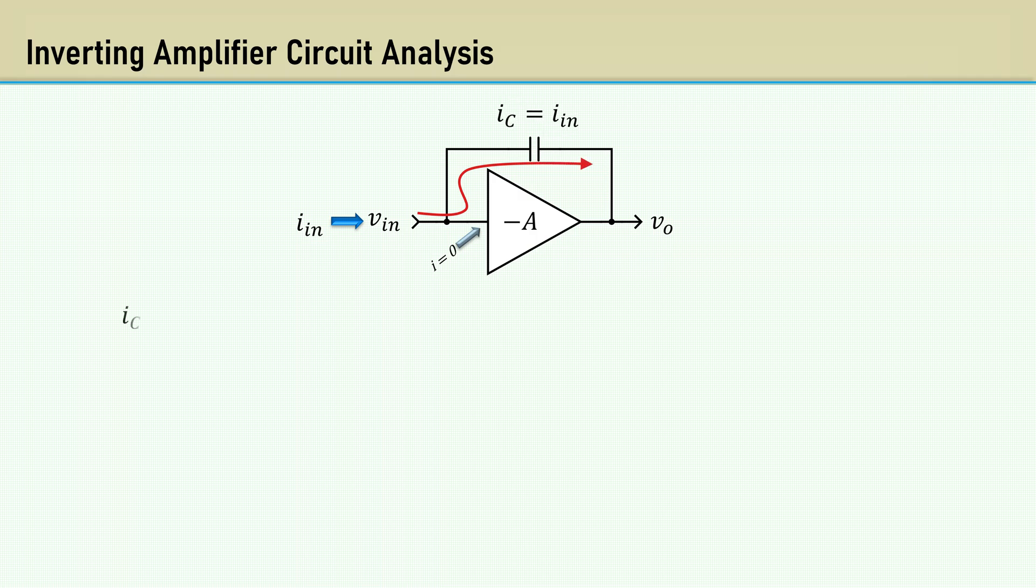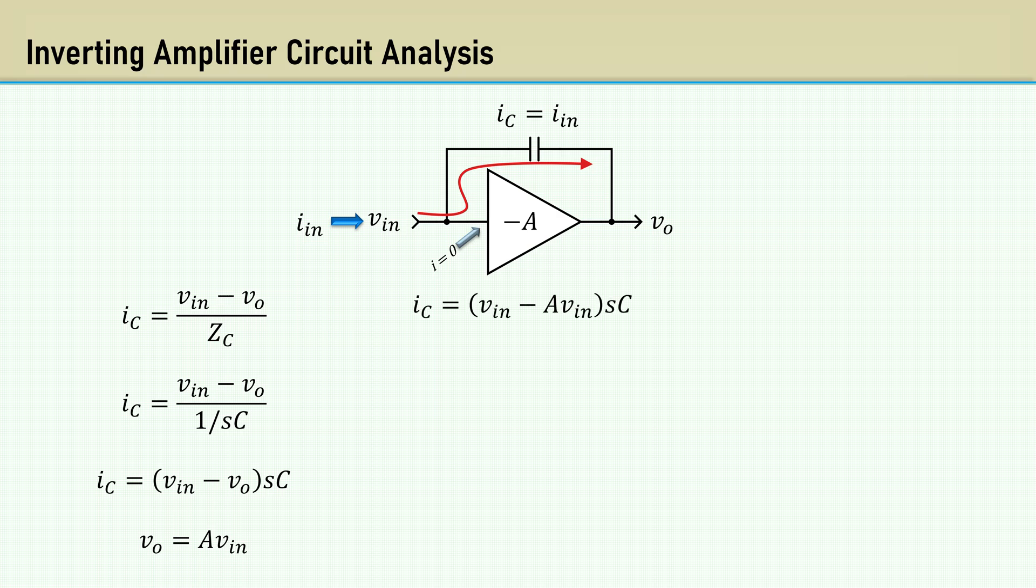The input current is the input voltage minus the output voltage over the impedance of the capacitor. The Laplace representation of the impedance of a capacitor is 1 over SC. Eliminate the fraction in the denominator. And since we know the output voltage is the input voltage times the gain A, we can substitute AVN for VO. Then factor out VN. Rearrange to solve for VN over the input current.